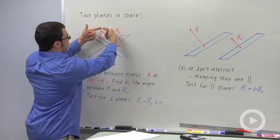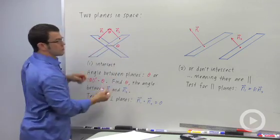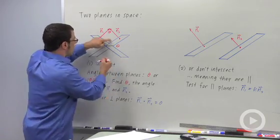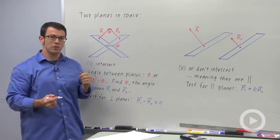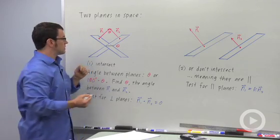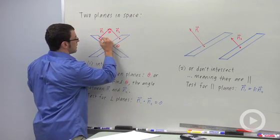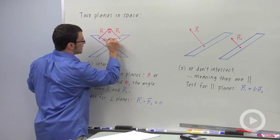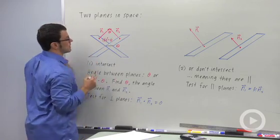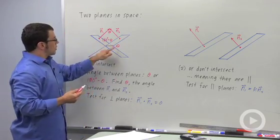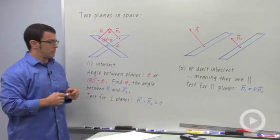But if this angle is large, then this angle will be large too, and the angle up here is actually going to be the smaller of the two. We always take the smaller of the two angles between theta and 180 minus theta, 180 degrees minus theta. So, the smaller of these two angles will be the angle between the two planes.